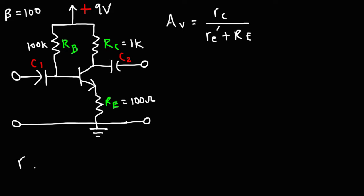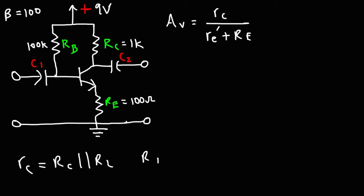To calculate the AC collector resistance, it's equal to RC, which is the parallel combination of RC and the load resistor. We don't have a load resistor at the output, so in this case the load resistor is infinity. Therefore, the AC collector resistance is the same as capital RC, the collector resistor, for this particular problem. So we have RC equal to 1K, or 1,000 ohms.